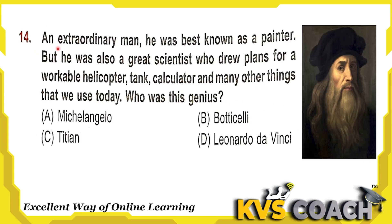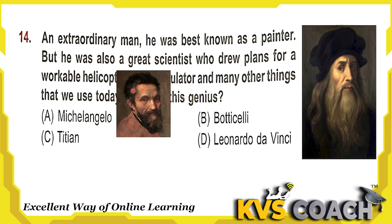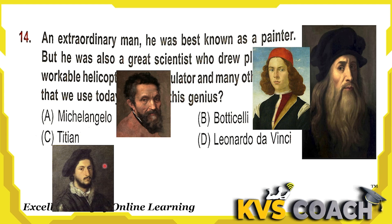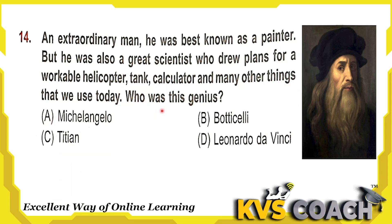Next question: an extraordinary man, best known as a painter, but also a great scientist who drew plans for a workable helicopter, tank, calculator and many more things that we use today — who was this genius? Option A is Michelangelo. Option B is Botticelli. Option C is Titian. Option D is Leonardo da Vinci. So the right answer is Leonardo da Vinci, option D.